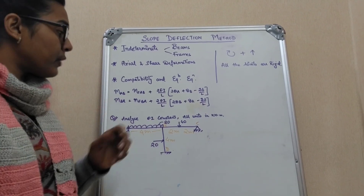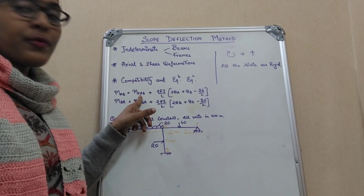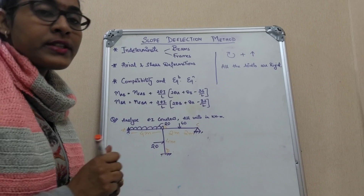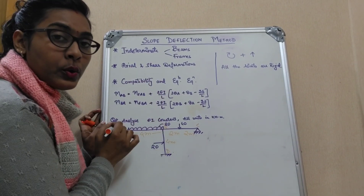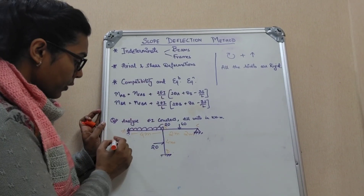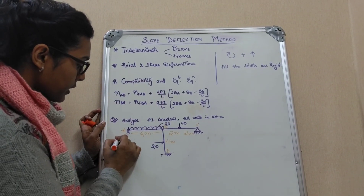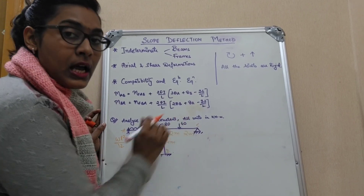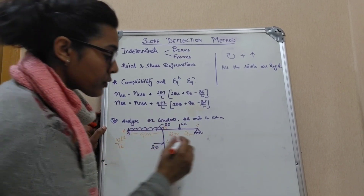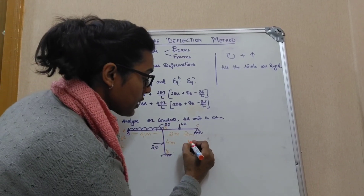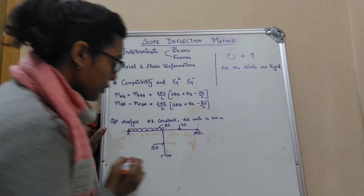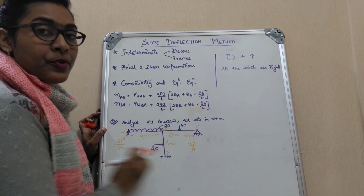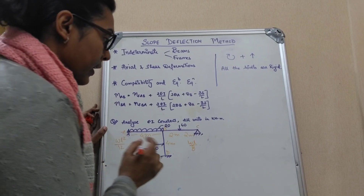Step number 1: we have to identify the fixed end moments. For UDL the formula is WL²/12, and for a point load the formula is WL/8. We will identify all the fixed end moments: MFAB, MFBA, MFBC, MFCB, MFBD, and MFDB.